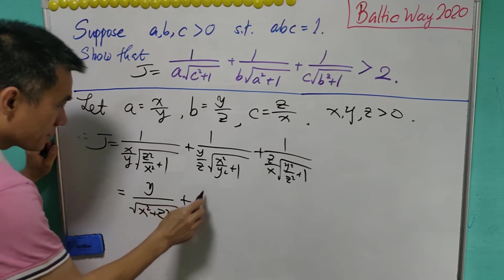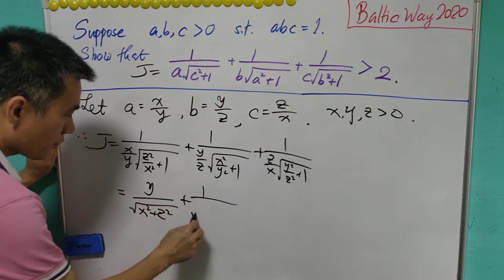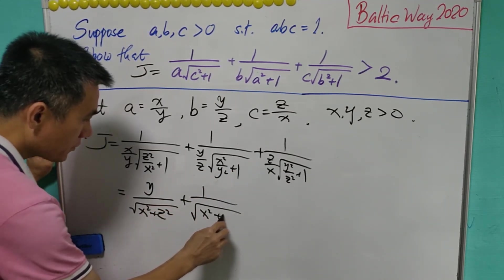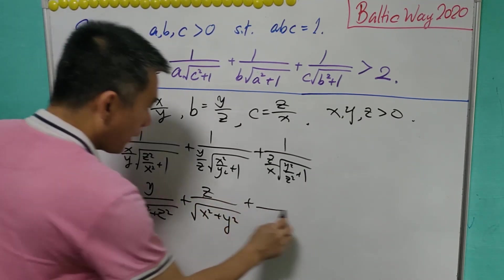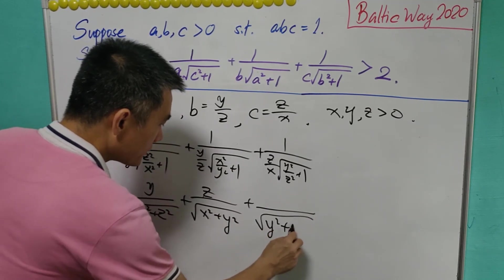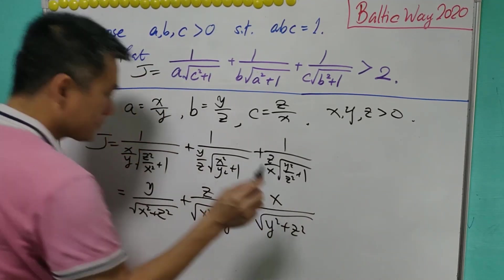Similarly, this will equal square root of (y squared plus x squared), and this denominator is z. And this is y squared plus z squared, and this denominator is x.